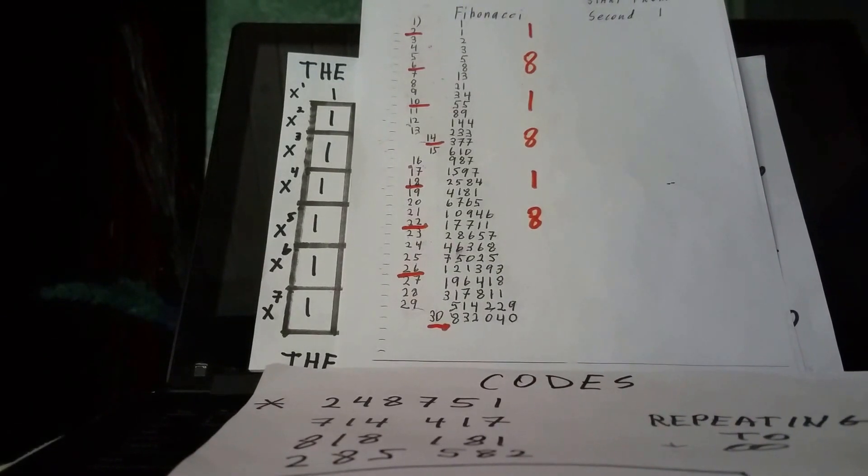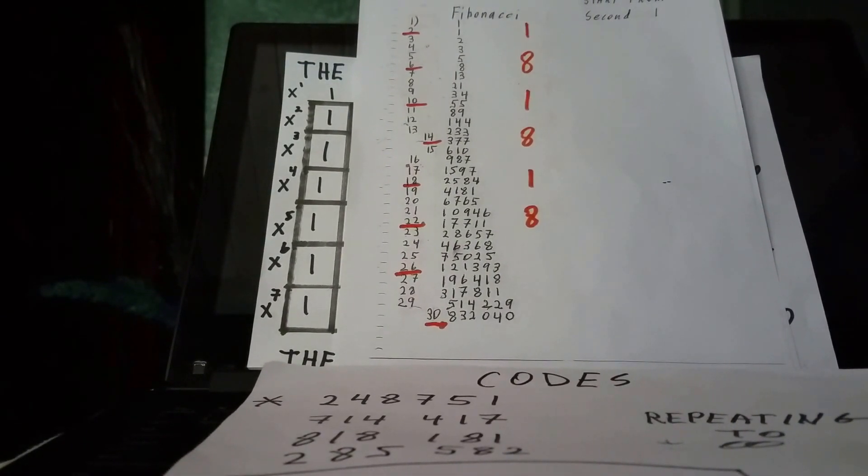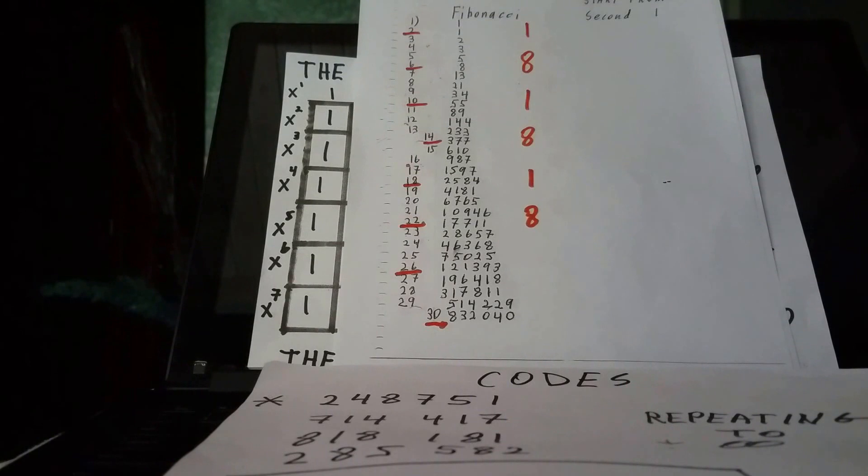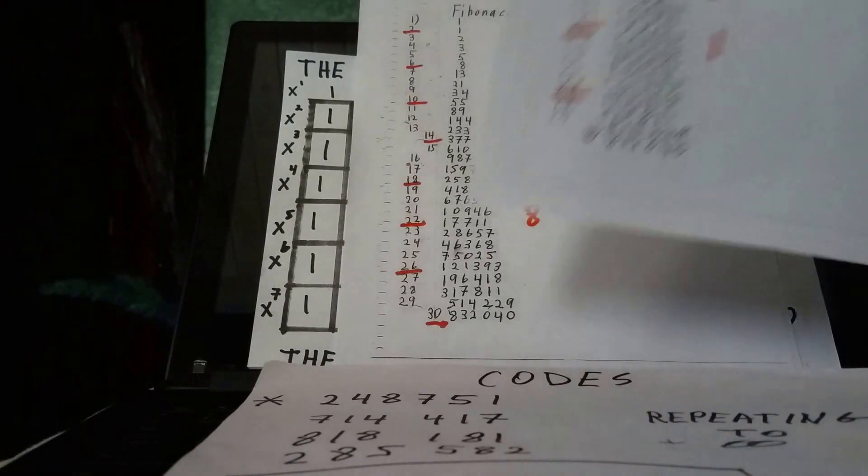Which, again, it's 369, it's 2, 4, 8, 7, 5, 1, which is 369. Okay. Now, I'm just showing you here how they start.